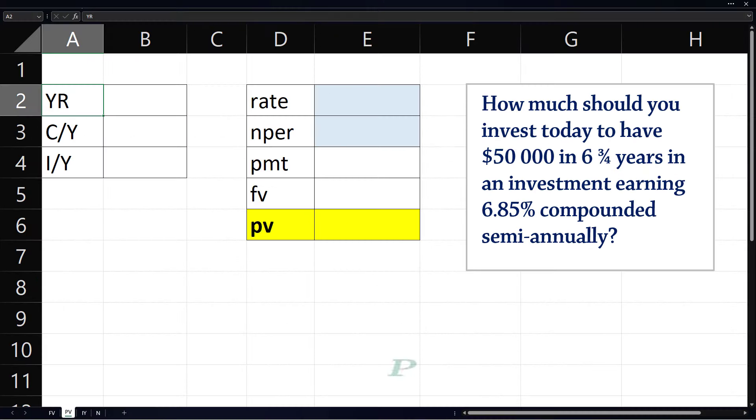Next, we consider an example involving present value. How much should you invest today to have 50,000 in six and three-quarter years in an investment earning 6.85% compounded semiannually? For the years, we can type equals 6 plus 3 over 4.